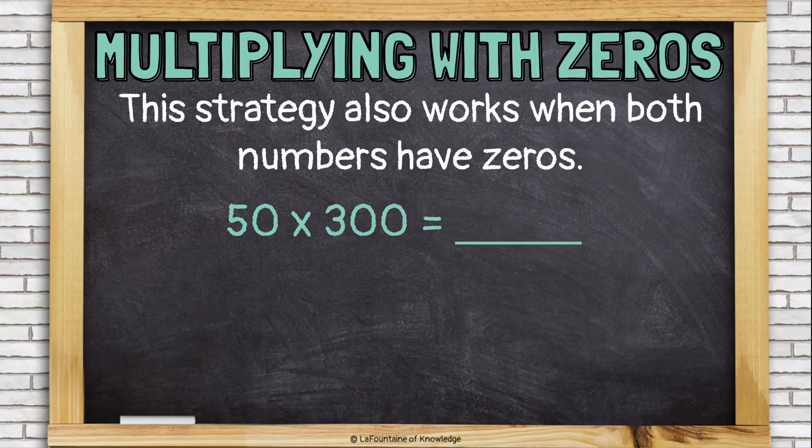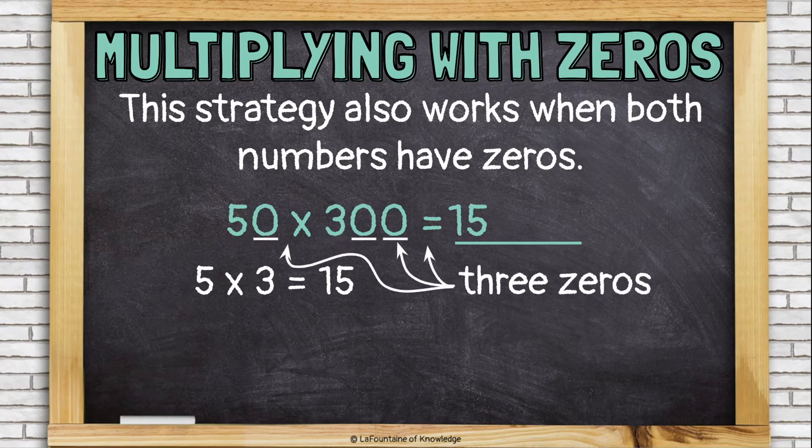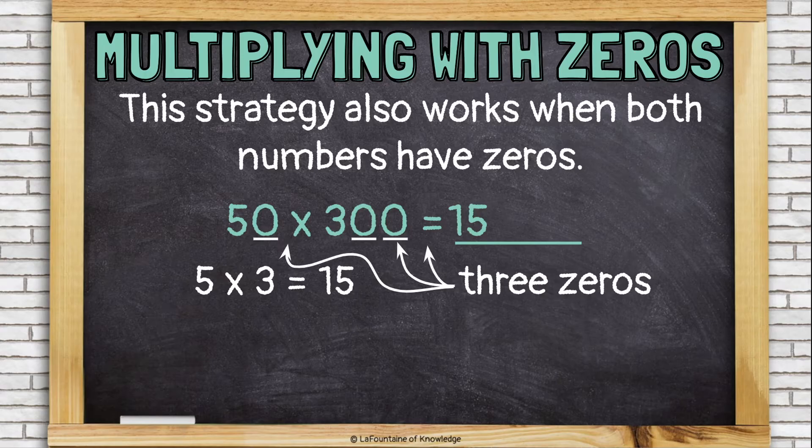This strategy also works when both numbers have zeros. Let's look at 50 times 300. First, we'll just multiply the numbers 5 times 3, and that's 15. Then, we'll see how many zeros we have in our problem. Three zeros. And we'll add that number of zeros to our answer.